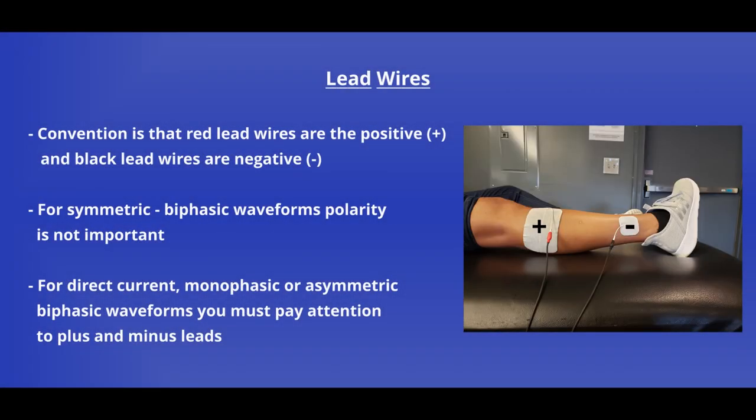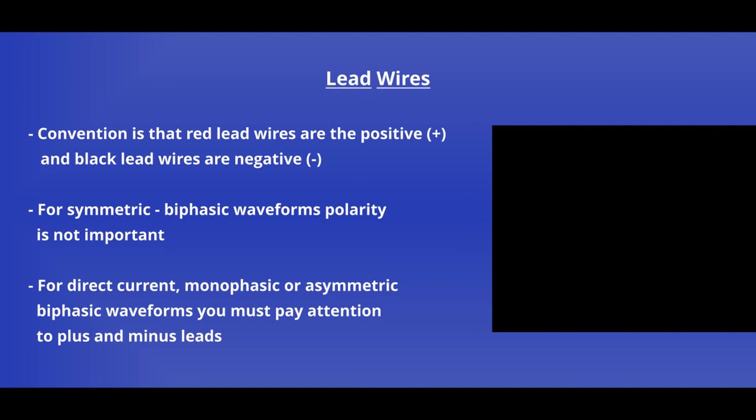Finally, we have our lead wires, which carry our current from the control unit to the electrodes. To complete the electrical stimulation circuit, we're going to need two electrodes and two wires. Leads are usually color-coded. The standard is to use red for positive and black for negative. However, that might not be the case always. For symmetric biphasic currents, it doesn't matter which one is plus and which one is minus. But when using direct current or unbalanced AC current, knowing where to put the positive and the negative electrodes is extremely important.